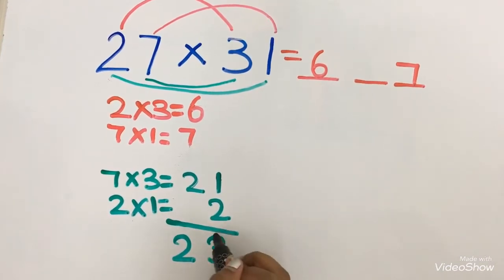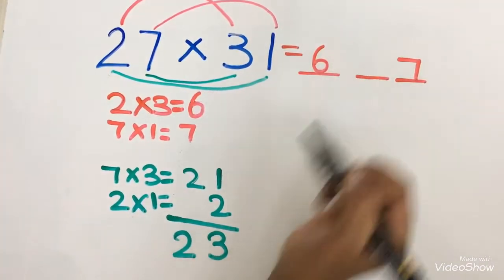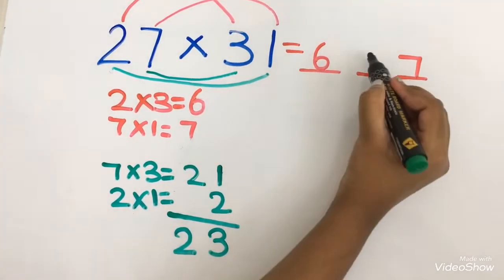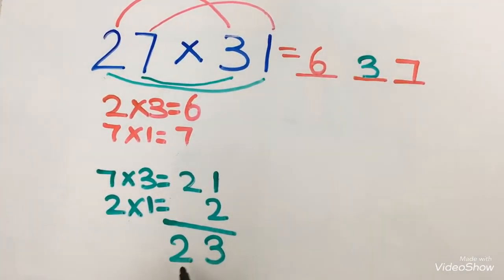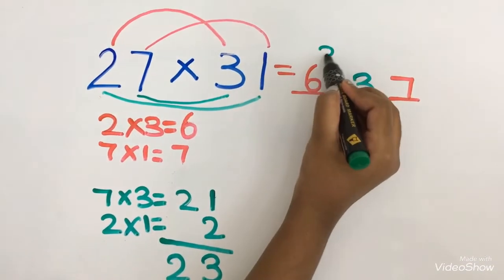Now we are going to take the 1's place and write it in the middle. So the 1's place is 3. I am going to write it in the middle. And the 2 is a remainder. I am going to write it over here.